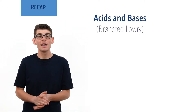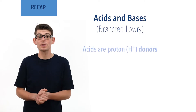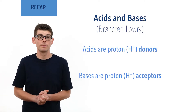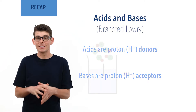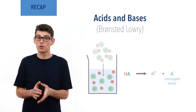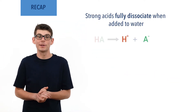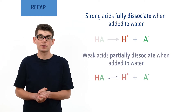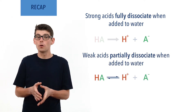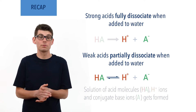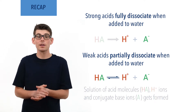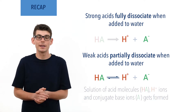Before we get stuck in, there are a few essential ideas you need to be comfortable with. According to the Bronsted-Lowry definition, acids are proton donors and bases are proton acceptors. Acids dissociate and split apart into H+ ions and their conjugate base ions when added to water. Strong acids fully dissociate and weak acids only partially dissociate, forming a solution that contains molecules of the acid written as HA, H+ ions, and conjugate base ions written as A-minus.